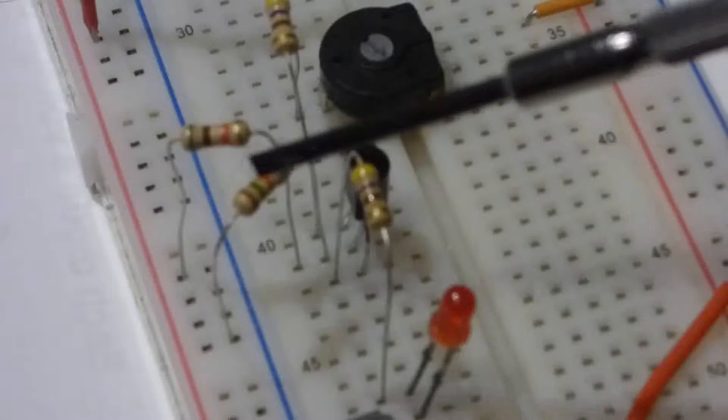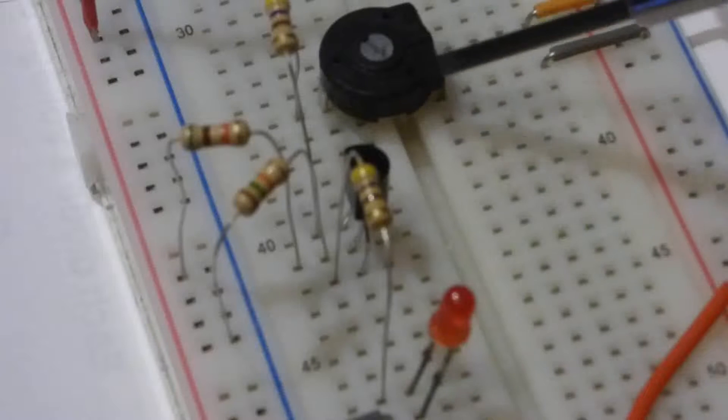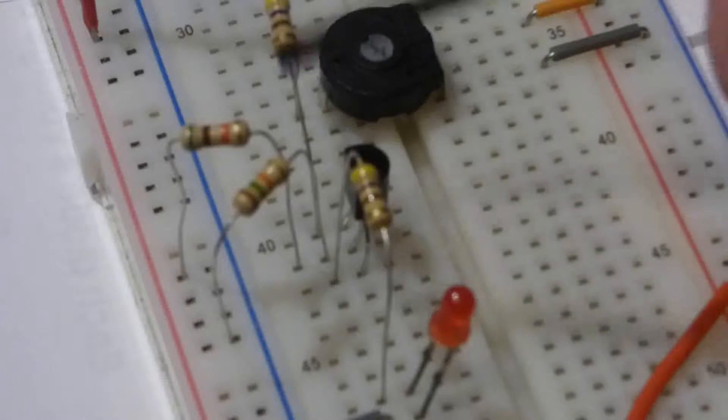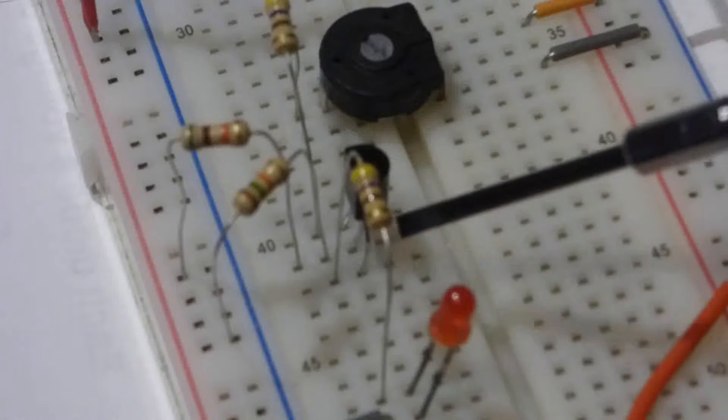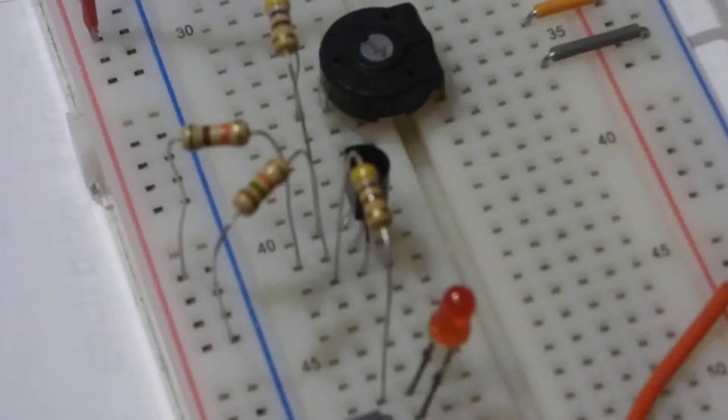So the voltage we set at the gate determines the voltage that the anode needs before the cathode will start conducting, and that's how this component works.